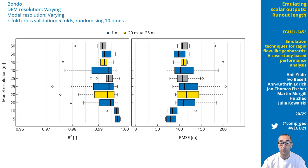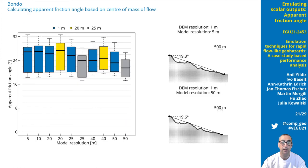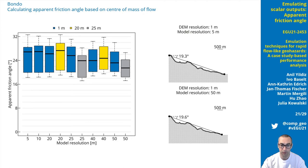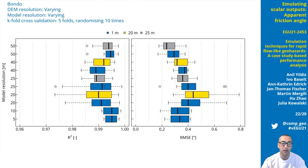An overall increase of R-square and decrease of root mean square error can be seen with decreasing model resolution. Here we see a summary of the apparent friction angles from simulations of the Bondo case. We calculated this parameter using the height difference along the path of the runout length. A slight reduction in the median apparent friction angle can be seen with increasing model resolution, especially for the coarse ones. Very high R-square values were obtained for all model and DEM resolutions.